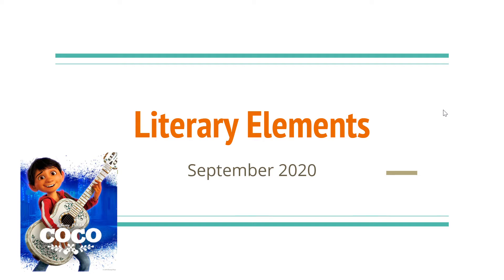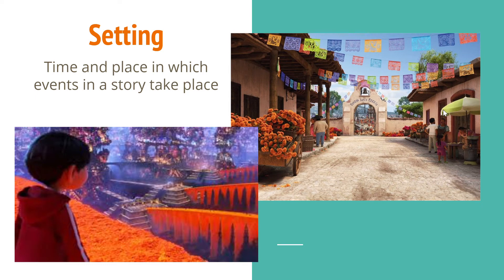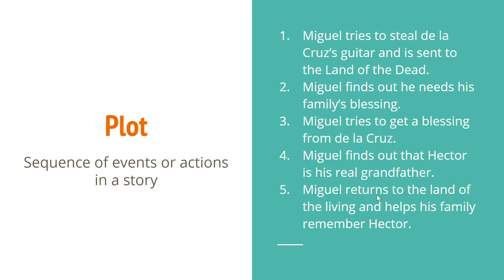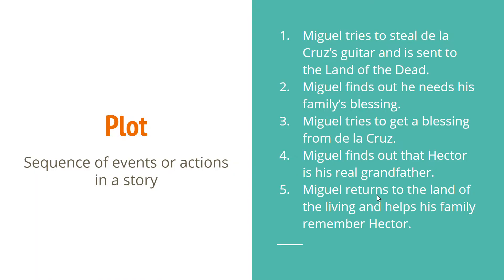The first thing I want to talk about is the setting. The setting is the time and place in which events in a story take place. In Coco, the setting is the land of the dead and the village of Santa Cecilia, and the time would be during the Day of the Dead.